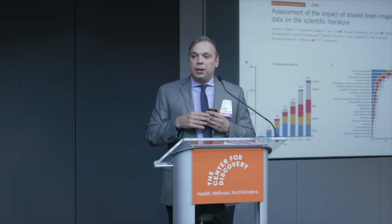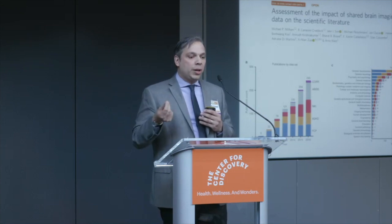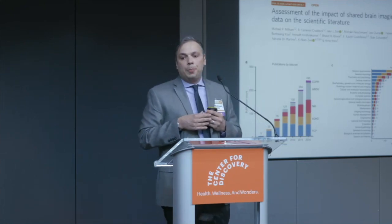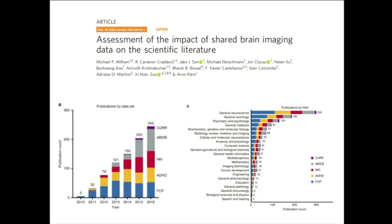What you're seeing on the left is basically publications generated using several of these consortia — efforts using data we've shared and publishing. There's a rapid rise in the imaging community. This data is actually only as of early 2017; at present there are well over a thousand publications that have come out. For initiatives like the Autism Brain Imaging Data Exchange, right now there are two publications a month coming out using data shared through ABIDE.